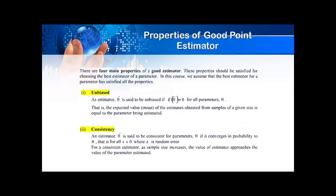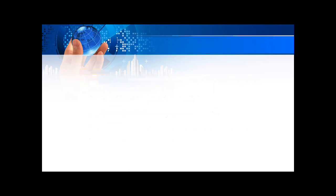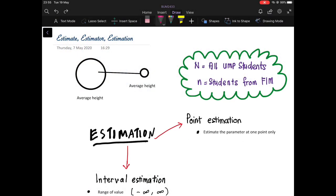Properties of a good point estimator: the estimator must be unbiased, consistent, efficient, and sufficient. Now, to illustrate estimate, estimator, and estimation — let me explain with an example.